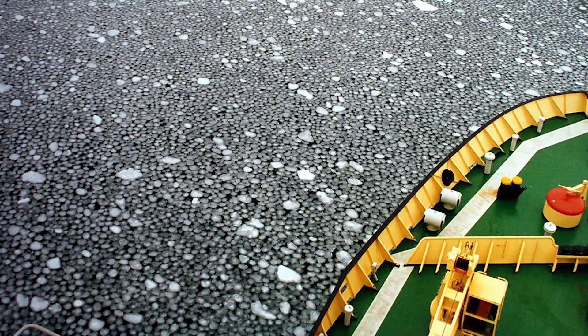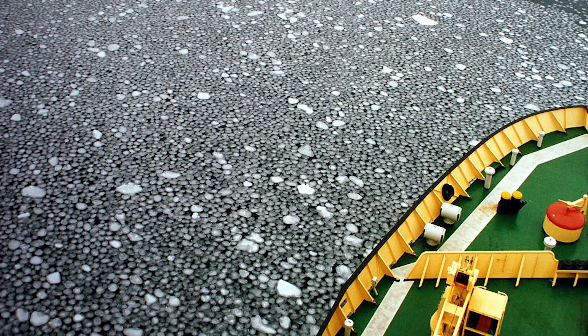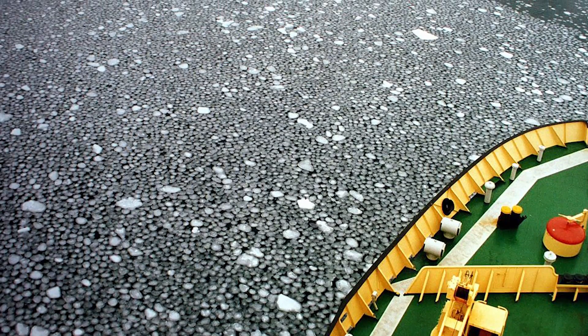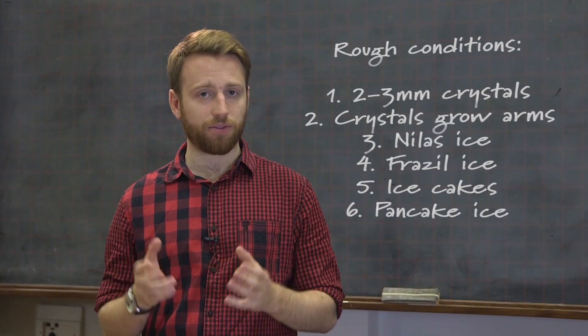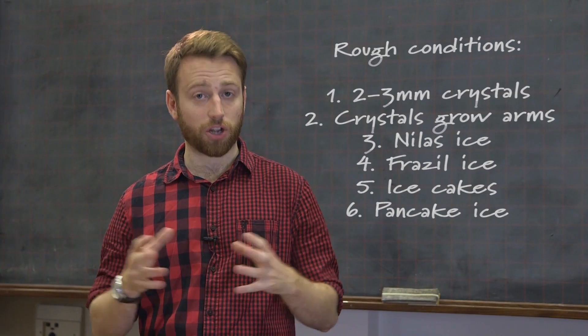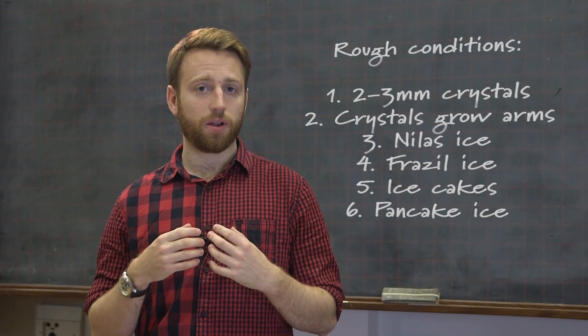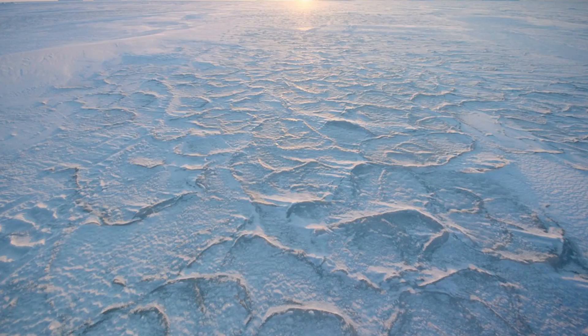At the ice edge, these pancakes are only a few centimeters in diameter, but the further into the ice pack you move, the pancakes become much larger, sometimes between three to five meters. The surrounding frazil ice continues to supply material to these pancakes. Further into the ice pack, where the wave field is calmed, these pancakes start to coalesce together and form consolidated pancake ice. This consolidated pancake ice is your first-year ice.